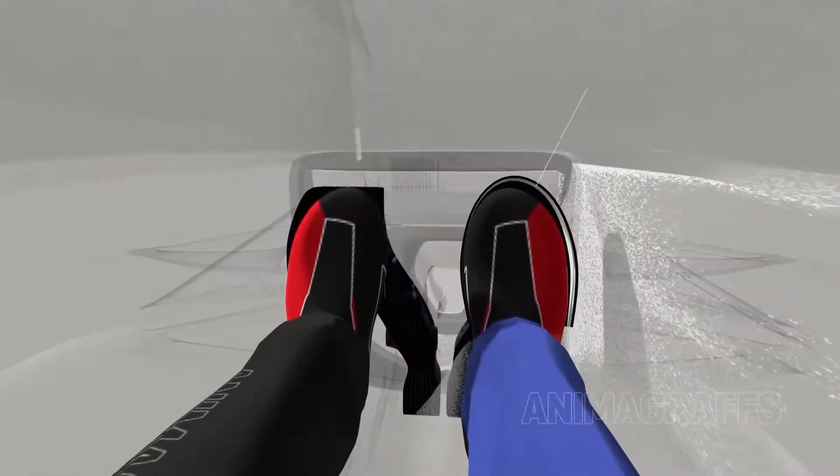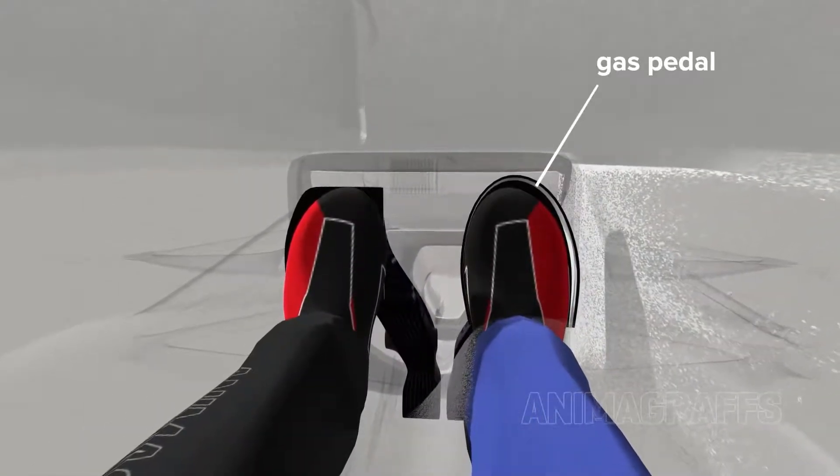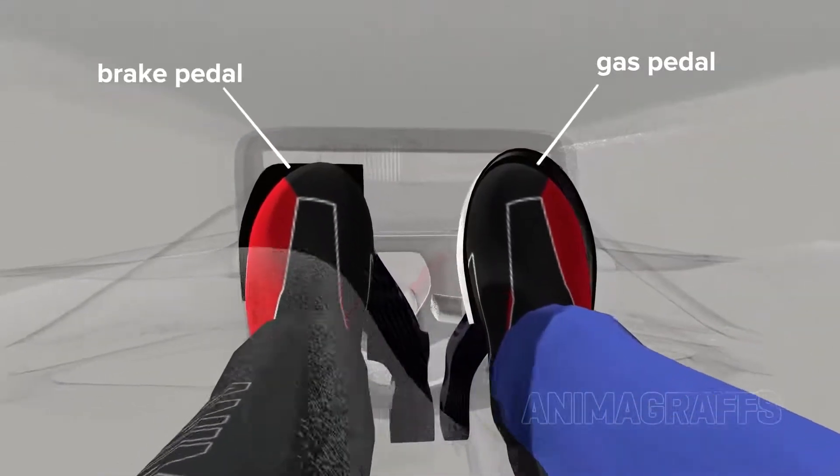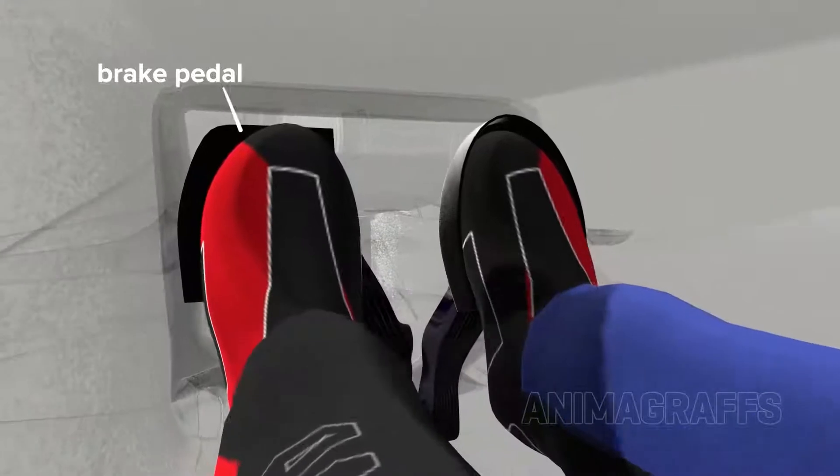Further down into the cockpit we see the gas pedal with contours to wrap around the driver's foot, so as to keep pedals completely separate, and the brake pedal on the left.